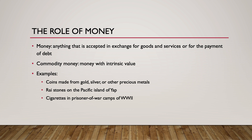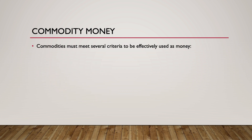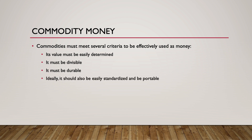These are all examples of commodity money, because the money used for transactions had intrinsic value. That is, the money was valued not just for its use in trades, but for value derived from other uses as well. Commodities must meet several criteria to be effectively used as money: its value must be easily determined, it must be divisible, and it must be durable. Ideally, money should also be easily standardized, and it should be portable.